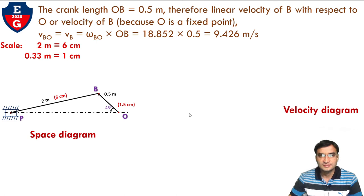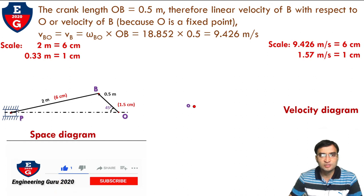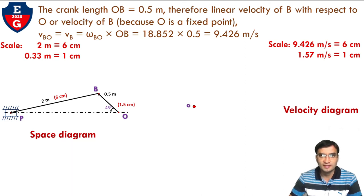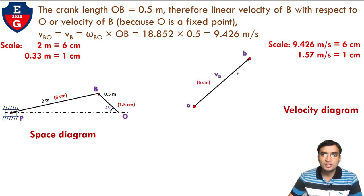Now construct the velocity diagram. The only known value is VB = 9.426 m/s. Assume 6 cm represents this, so the scale is 1 cm = 1.57 m/s. Take a random point O. Remember: the velocity of any point on a link with respect to another point on the same link is always perpendicular to the line joining those points on the space diagram. For crank link OB, draw a perpendicular line from O with length 6 cm to get point b.